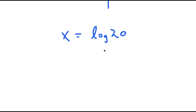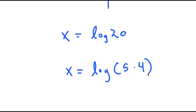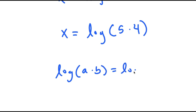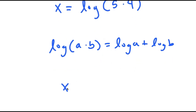Now let's find the exact value of this. Log 20 is equal to log of 5 times 4. And if I have something in the form log of a times b, this is equal to log a plus log b. So x is going to equal log 5 plus log 4.